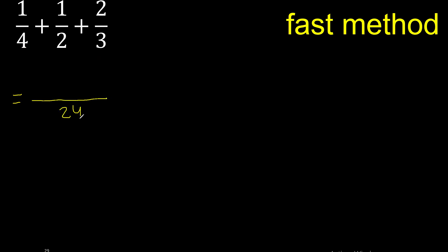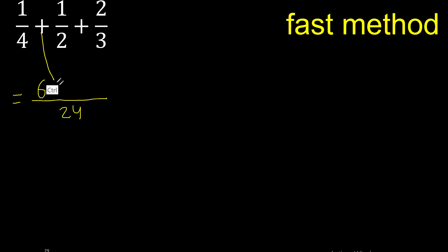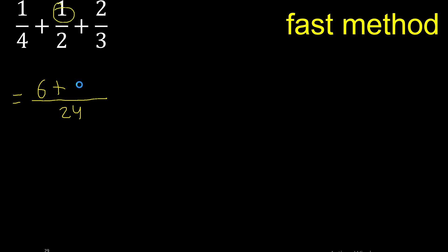Here, 24 divided by 4 is 6, 6 x 1 is 6. 24 divided by 2 is 12, 12 x 1 is 12.